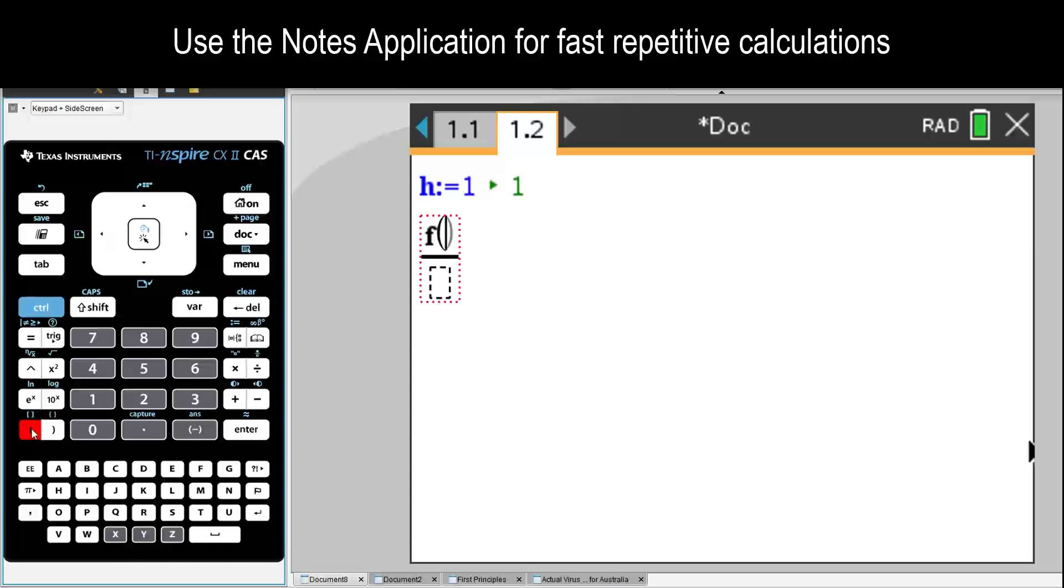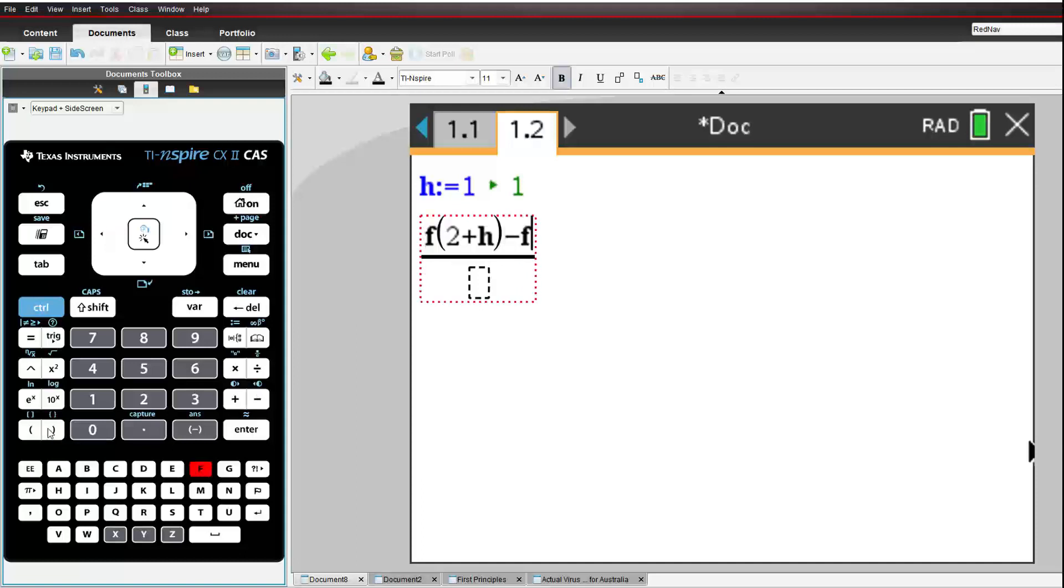To save time, I've put these calculations into the notes application in a TI-inspire file. We can see that by moving the second point closer and closer, the gradient of the line segment appears to approach a specific value. That is, the gradient appears to be approaching 4.